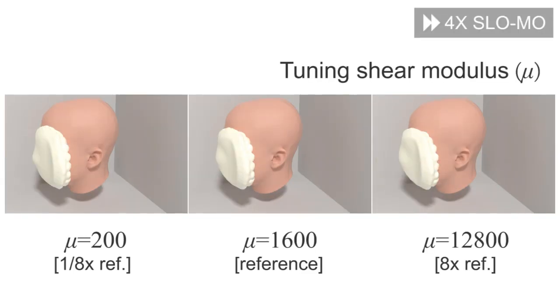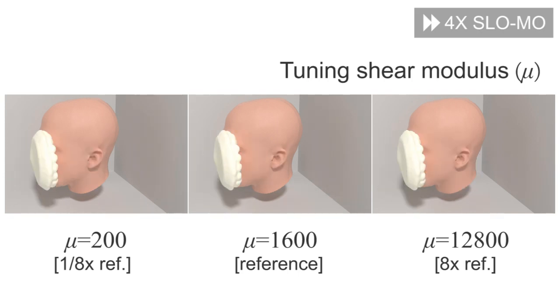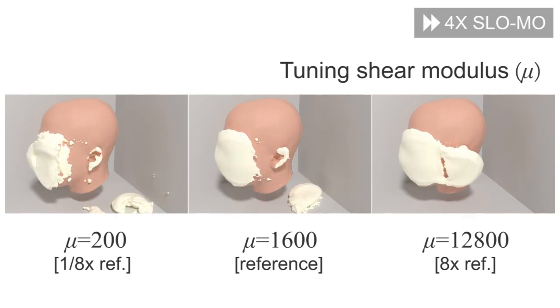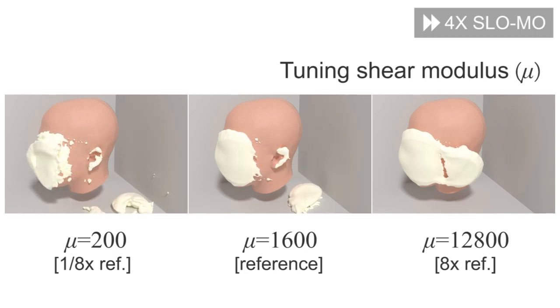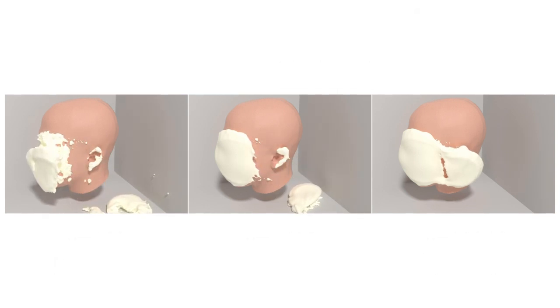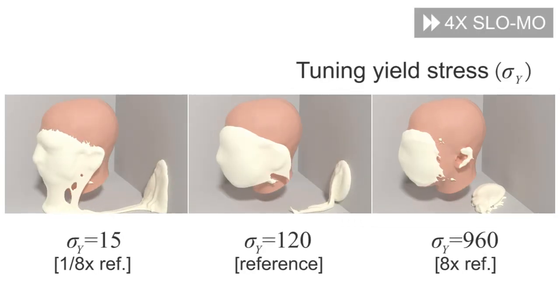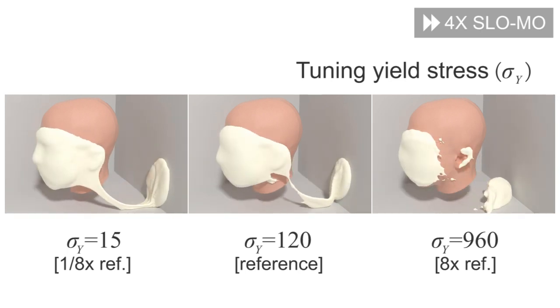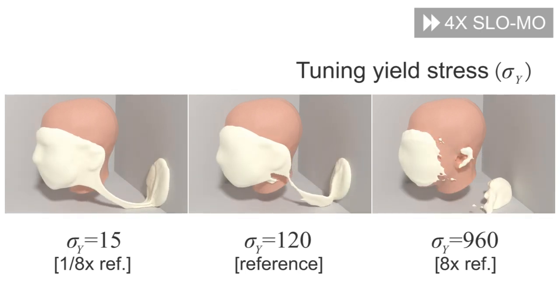We now illustrate the effect of each parameter of our model. With a higher shear modulus, the material becomes stiffer. Setting a lower shear modulus allows for more stretchy behavior. With a higher yield stress, the material behaves more elastically, while with a lower yield stress, the material can easily flow, allowing for a more fluid-like behavior.